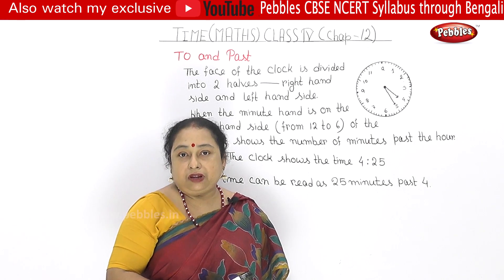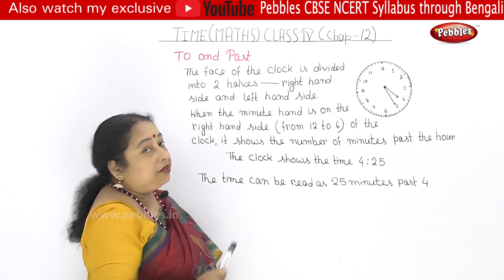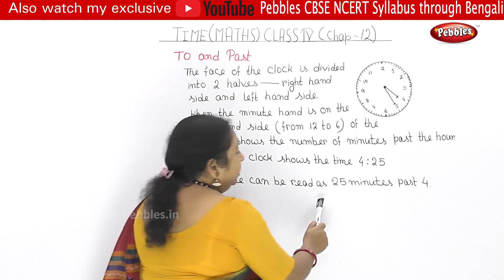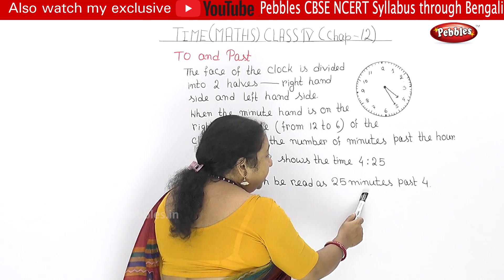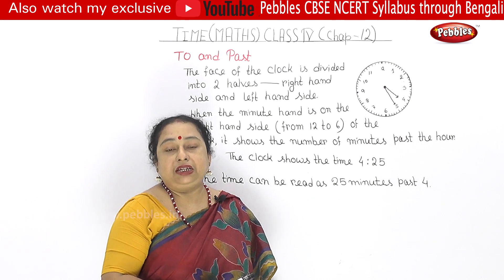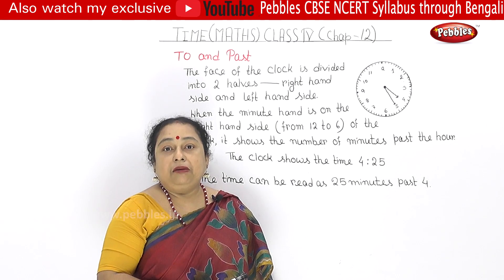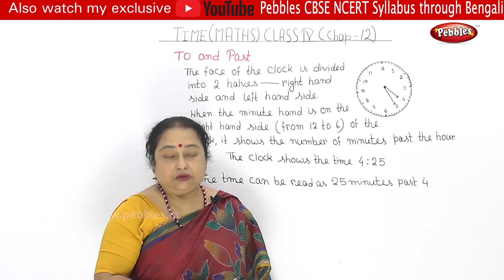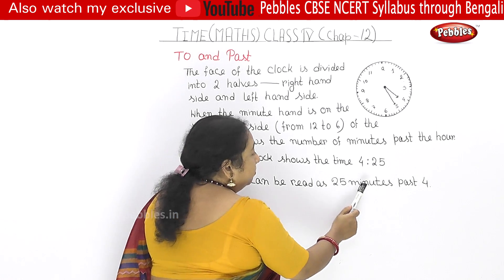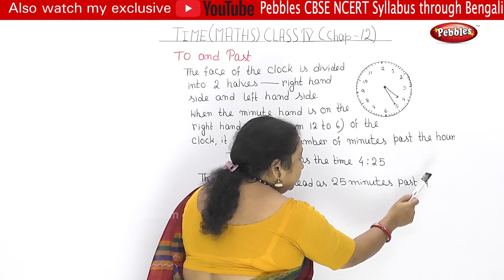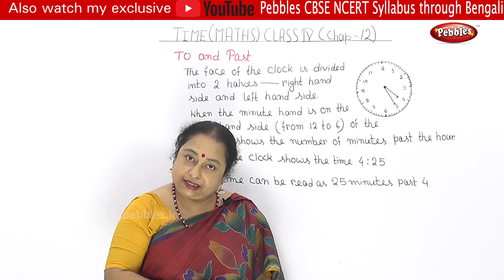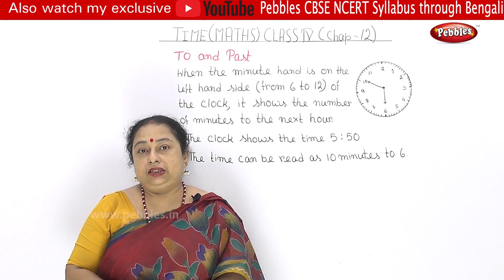When the minute hand is on the right-hand side, the time can be read as '25 minutes past 4'. For example, 4:25 — we say 25 minutes past 4. This is how we use 'past' when telling time.